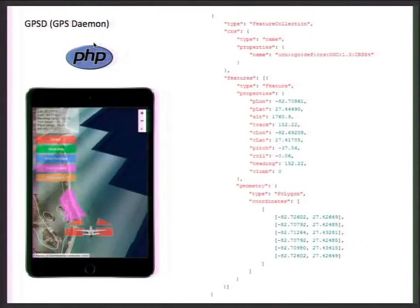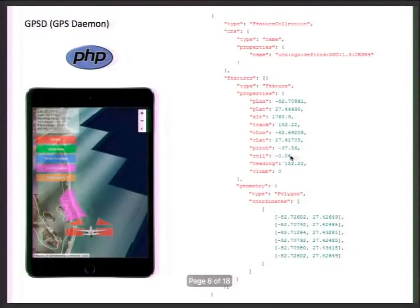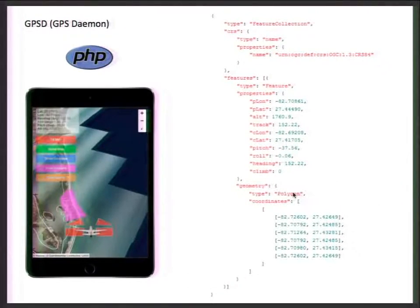PHP queries the daemon on a one-second interval: where am I? That gives us the latitude and longitude of the plane so we can position it on the map. We're also getting from the PRDID tag the pitch, roll, and heading so we can put polygons on the map. When you saw the plane swinging, it uses that information to make the polygons bigger or smaller depending on which way the plane is pointing.